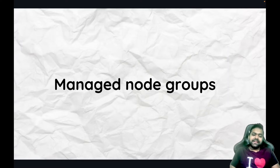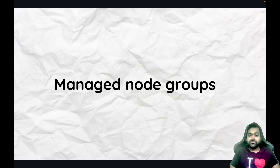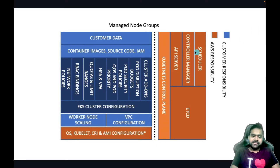Managed node group — the name itself indicates 'managed.' What does that mean? AWS partially manages your node group and offers some capabilities that ease your management load, so you can focus on other problems. Looking at this diagram from the EKS best practices website by AWS, the left side is the control plane and the right side is the data plane. Orange color indicates AWS responsibility, and blue color shows your responsibility as a customer.